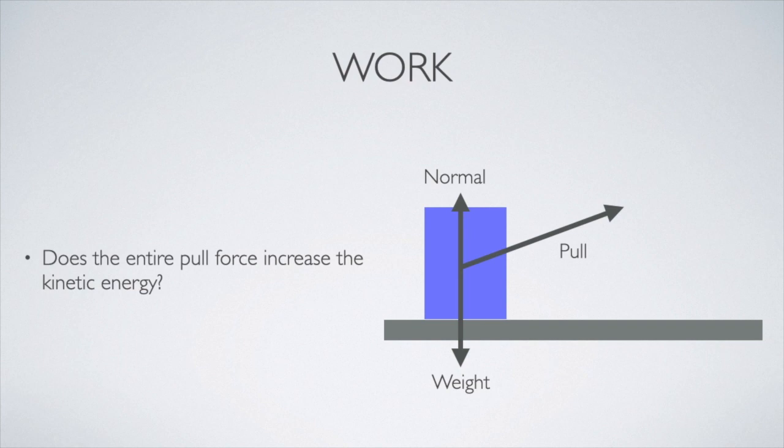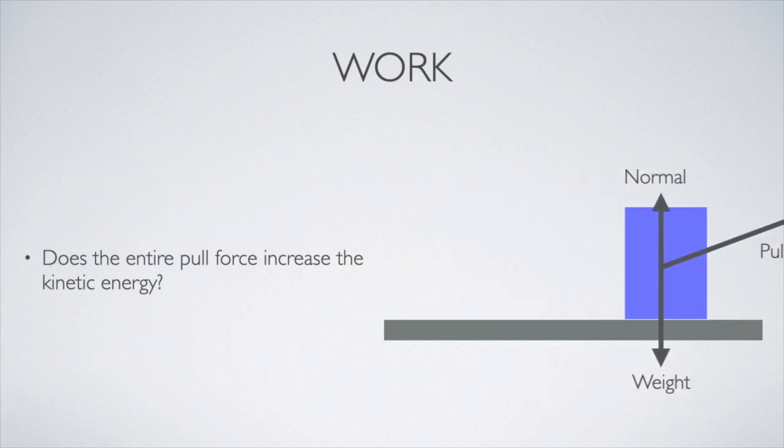In our final example here, let's have the pull force be at an upward angle. The vertical component of the pull force acts to reduce the magnitude of the normal force so that there's no acceleration in the y-direction, and the horizontal component is what produces the acceleration and the change in kinetic energy.